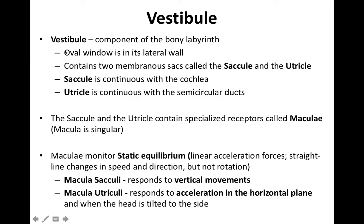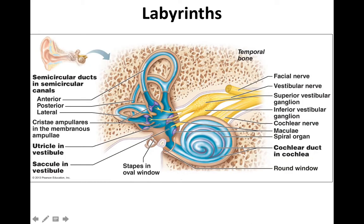The vestibule is considered bony labyrinth, filled with parts of membranous labyrinth as well as perilymph. The two membranous labyrinth components within the vestibule are the saccule and the utricle. In this image, the saccule sits towards the base near the cochlea — like the snail's head if the cochlea is the snail shell — and the utricle is up here, closer to the semicircular canals. Both are associated with balance and position.